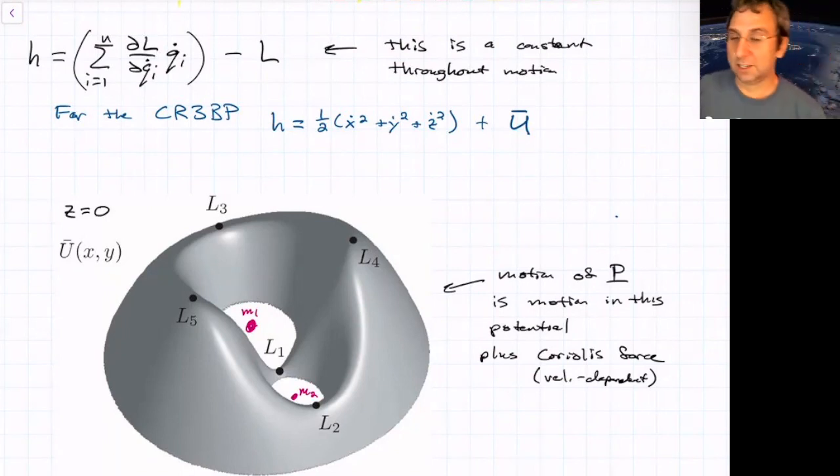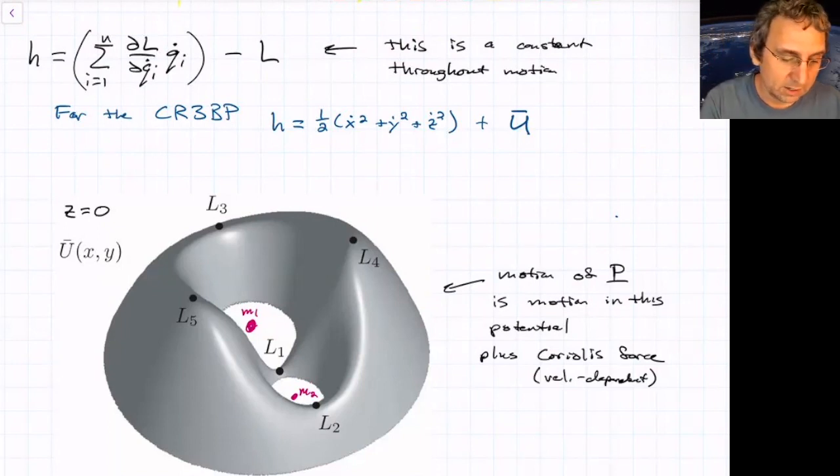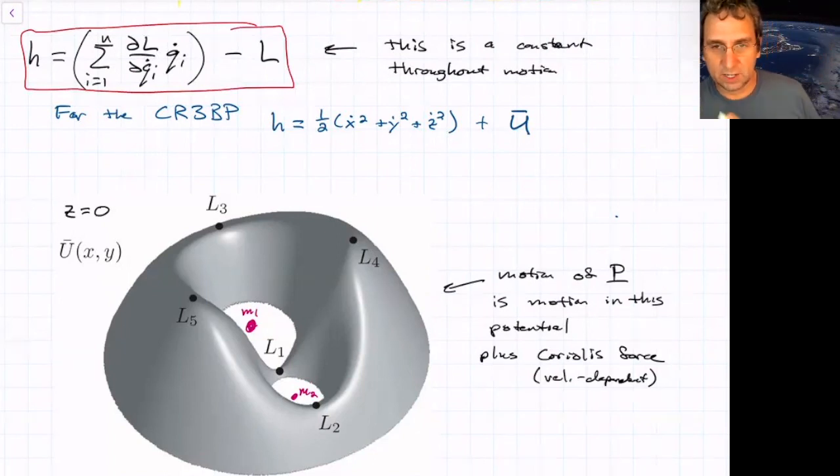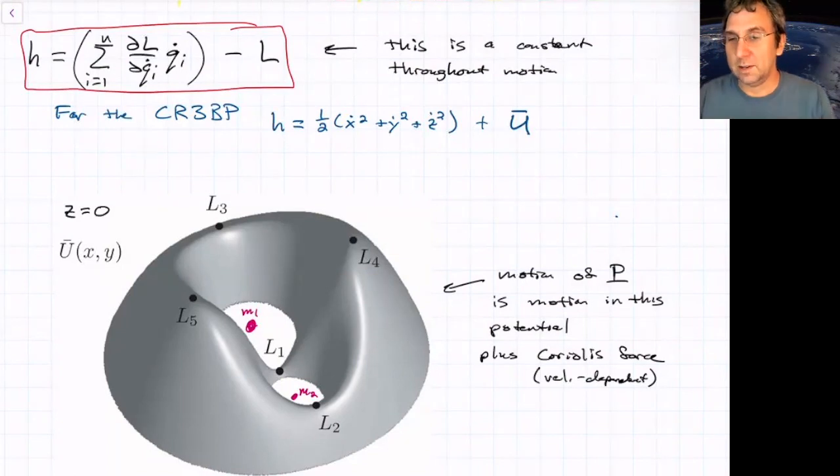And historically, it's also been called that for the three-body problem for centuries. For any Lagrangian system with generalized coordinates QI, where I goes from one to N, this is what you get for the Jacobi constant. It's a constant if your Lagrangian doesn't explicitly depend on time, which ours does not because we went into the rotating frame. So the big advantage of going into the rotating frame is this constant of motion. The price you pay is that it's a little harder to interpret what orbits are doing because it definitely does not look like the usual Keplerian orbits.